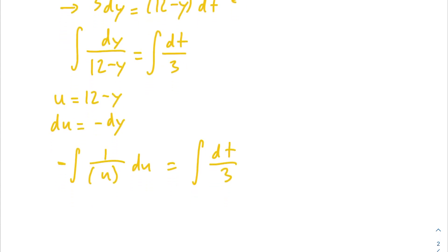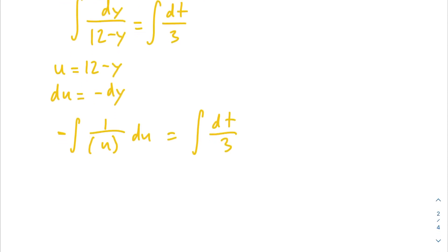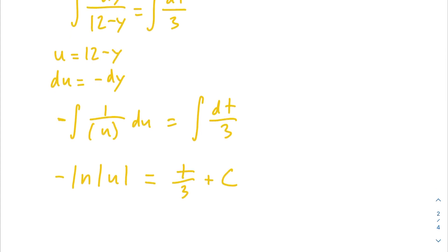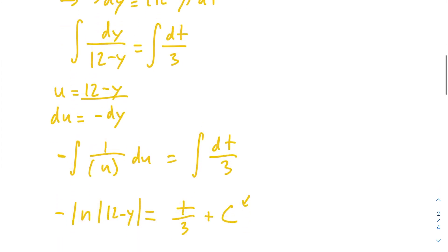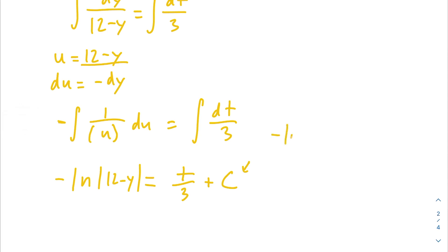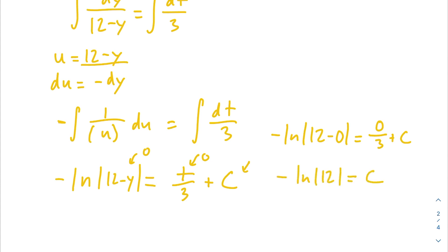Taking the integral: the integral of 1/u is ln|u|, with the negative out front. The integral of dt/3 is t/3, plus the constant of integration c. We substitute u back in, giving -ln|12 - y| = t/3 + c. We still have c, so we solve for it using the initial condition (0, 0): -ln|12 - 0| = 0/3 + c, which gives us c = -ln 12.